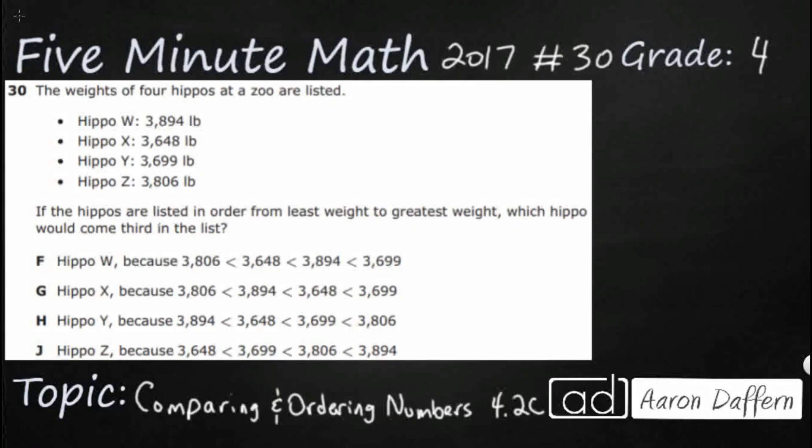Hello and welcome to 5-Minute Math. Today we are looking at the fourth grade concept of comparing and ordering numbers. This is standard 4.2C in the great state of Texas and we are using item number 30 of the 2017 released STAAR test.